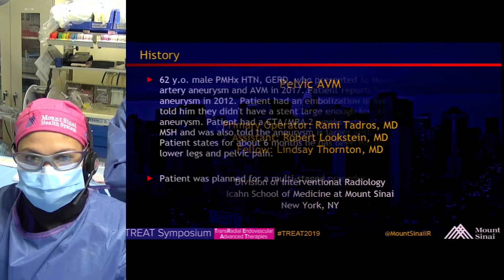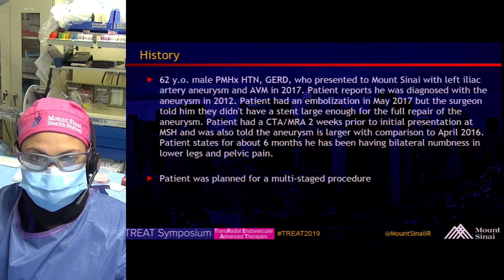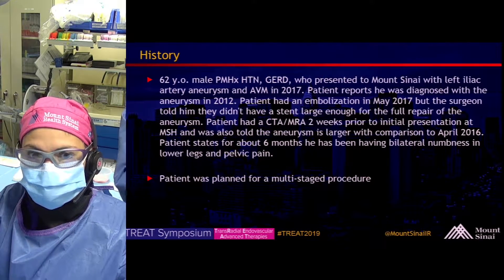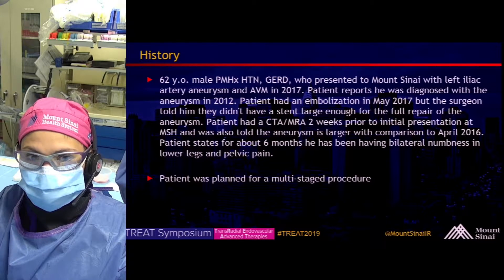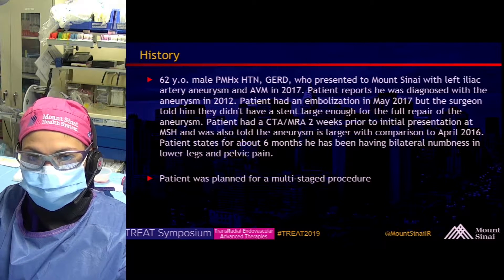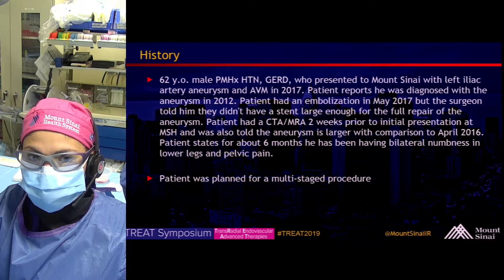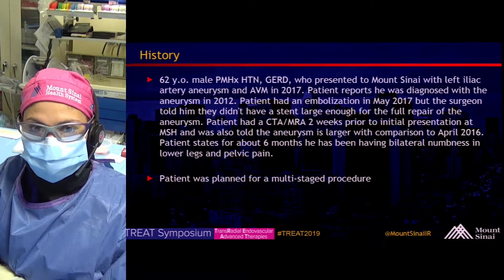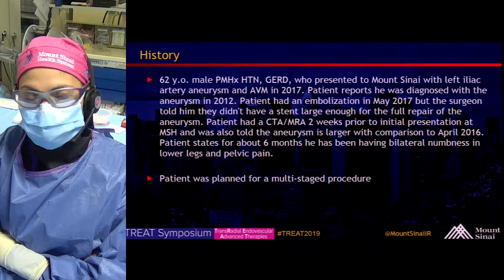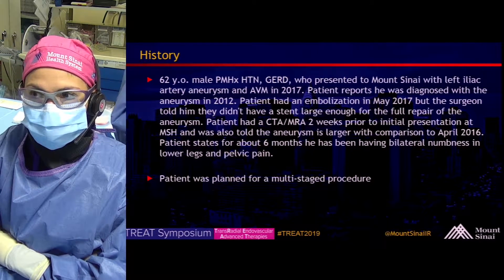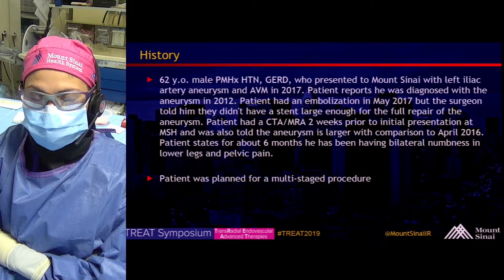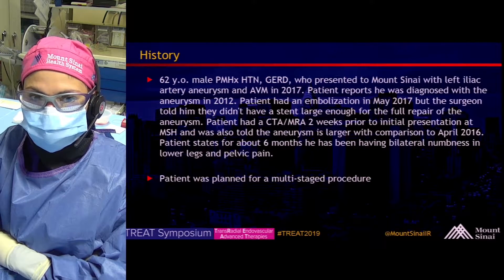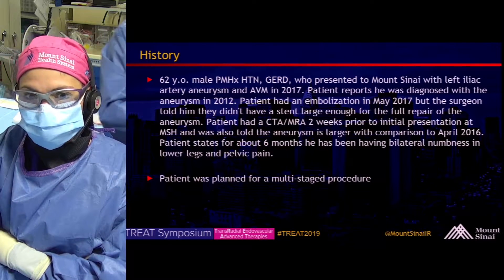Good morning, everyone. This case is a 62-year-old gentleman with past medical history for hypertension and reflux who presented in 2017 to Dr. Tadros. He had been diagnosed with an aneurysm in 2012 of his left iliac artery and had undergone embolization of a simultaneously found AVM in May of 2017. The surgeon at that time told him they didn't have a stent large enough to fully repair his aneurysm. The patient had a CTA and an MRA two weeks prior to the initial index embolization at MSH, and the aneurysm looked larger, so intervention was planned.